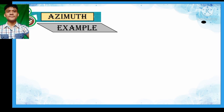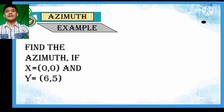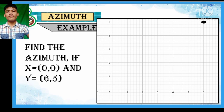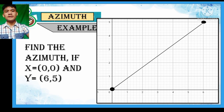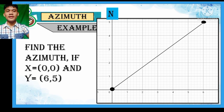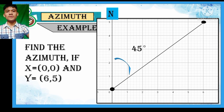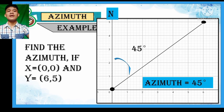How about this given example? Find the azimuth value if point X is (0, 0) and Y is (6, 5). First, we should plot those given points — we have (6, 5) for our Y, and (0, 0) for our X, which is our observer. The north direction is given, so we connect those points to make a line. We then measure the angle between the north and the line of interest. Assume that it is 45 degrees, since it occupies half of a quadrant. So the azimuth value is 45 degrees.